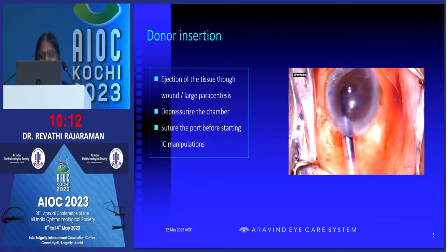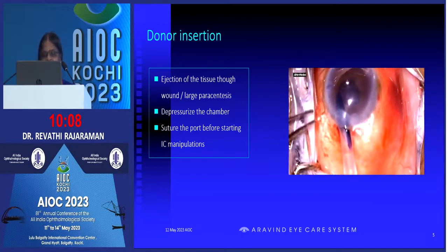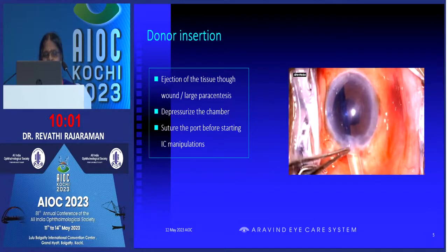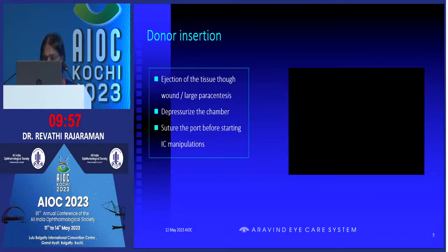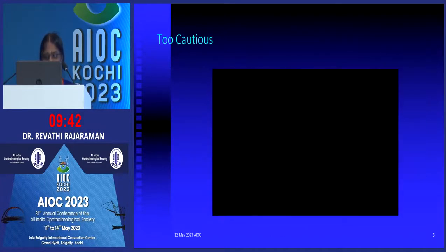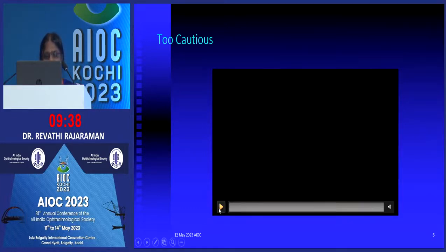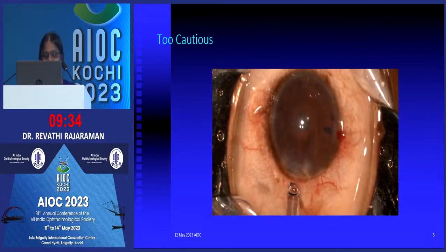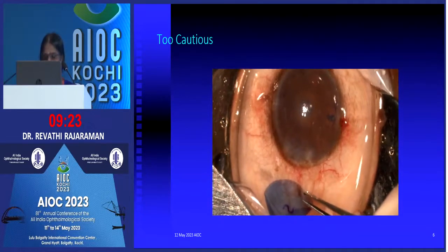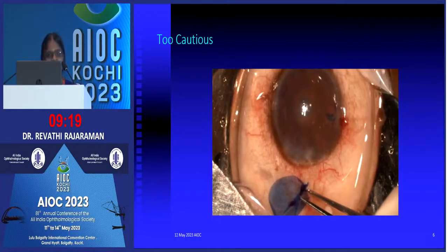For donor tissue insertion, you have to depressurize the anterior chamber before taking the cannula — the cartridge — out. If you don't do that, the donor tissue can easily come out with the pressure. Luckily in one case it was sorted out and re-injected, but we will not always be that lucky, and sometimes we may need a backup tissue. Being too cautious is also a problem — if you have a long arm of the injector and keep checking without concentrating, it can suddenly come out. All these manipulations reduce your endothelial count, so we have to be very careful.